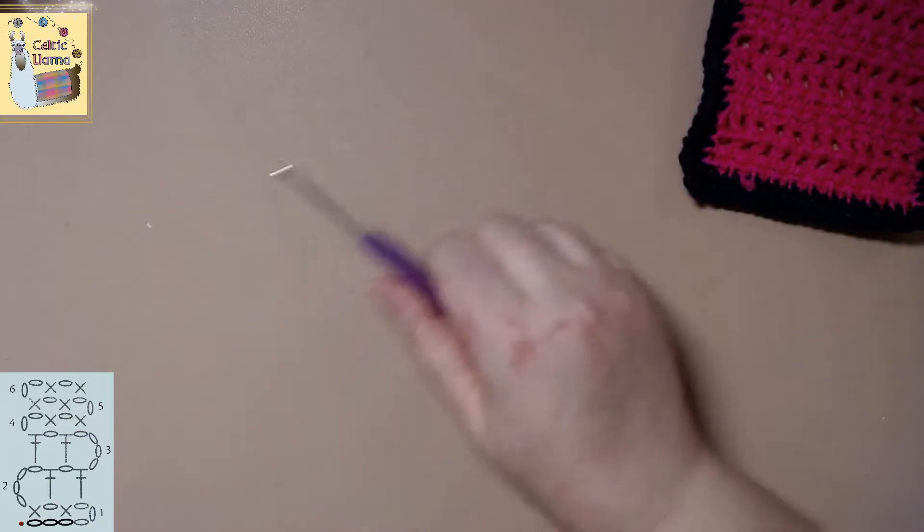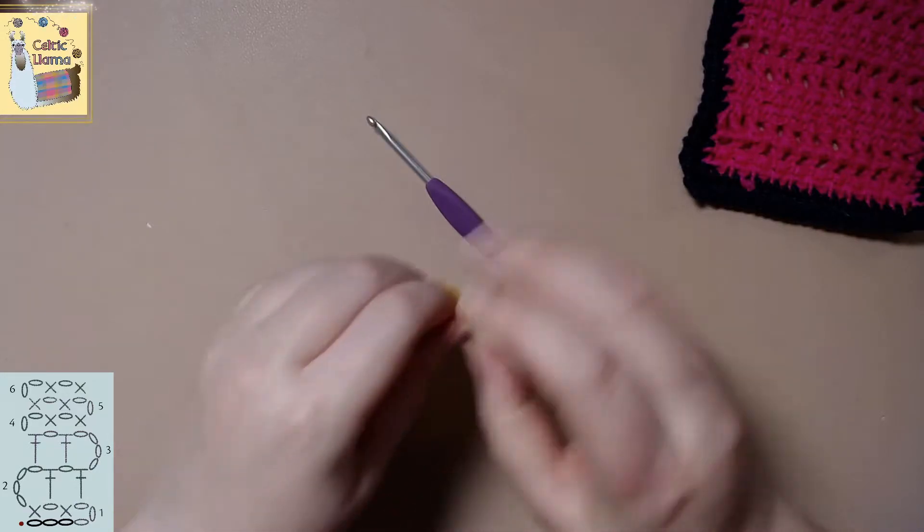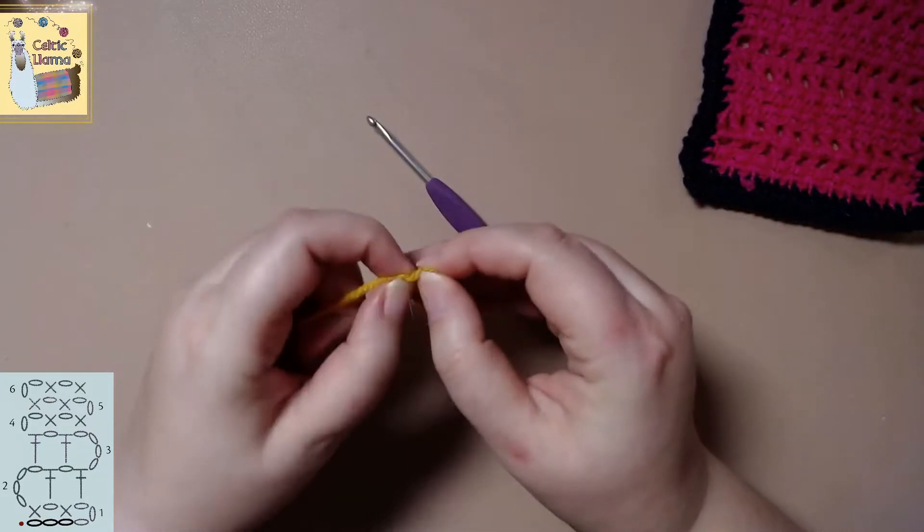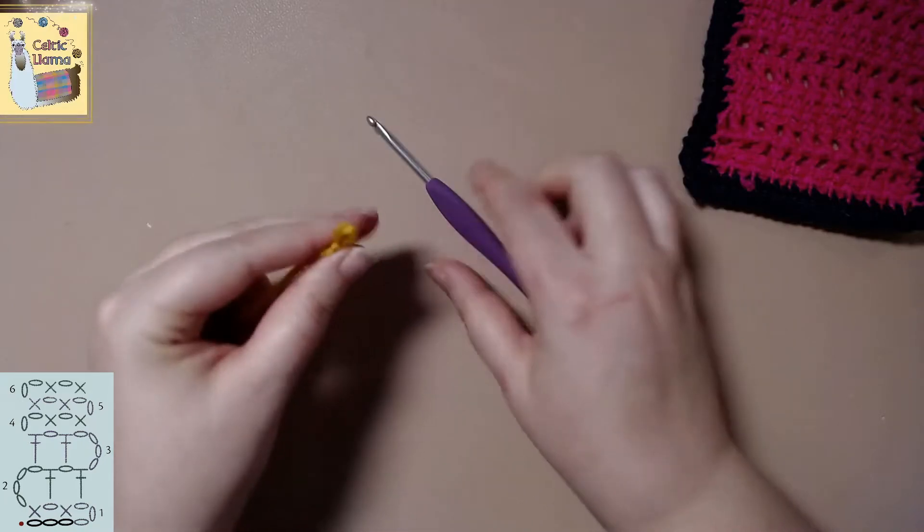Now to get started you want to have a foundation chain of multiples of two plus one, so I'm going to do a quick ten chains plus one for a total of eleven.